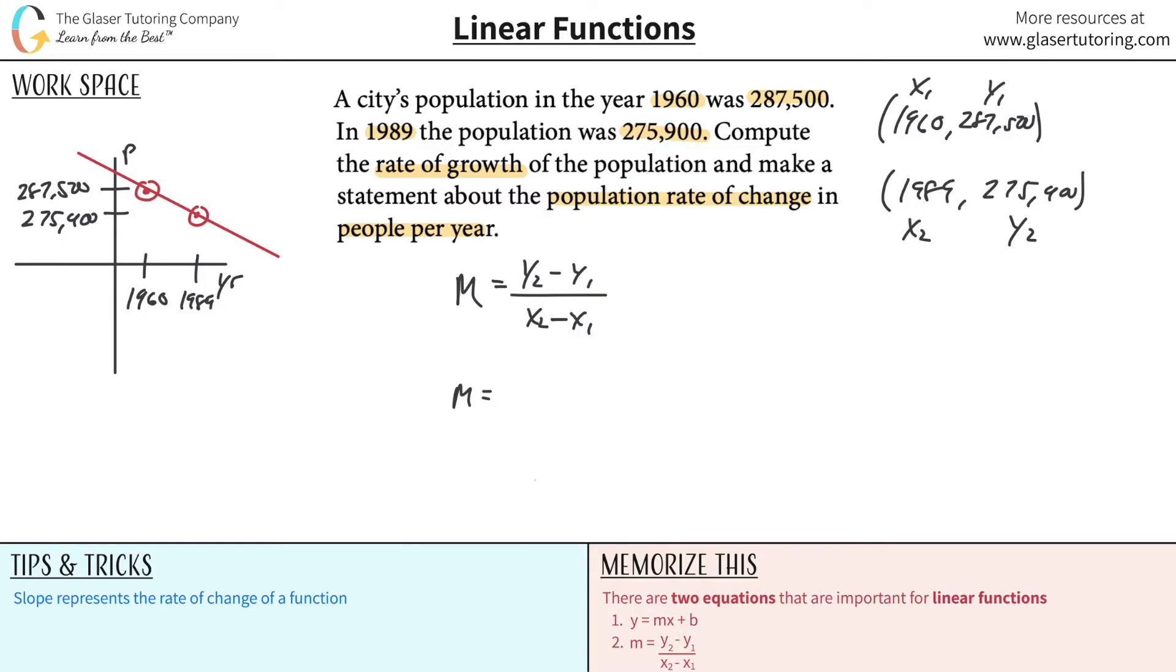It's always good and important to define the variables. So y2 is going to be 275,900 minus then y1, which is 287,500, all over x2, which is 1989 minus then 1960. Let's do some math.